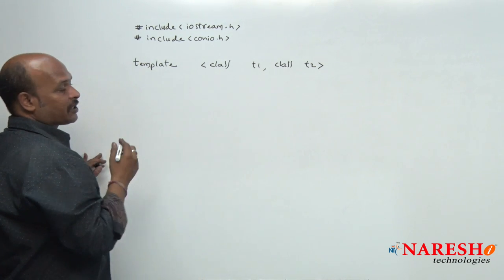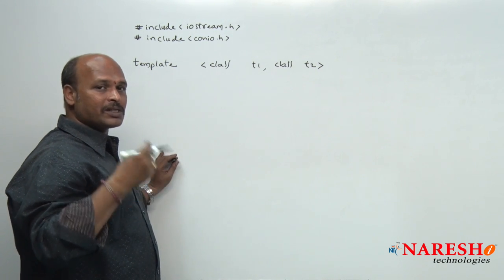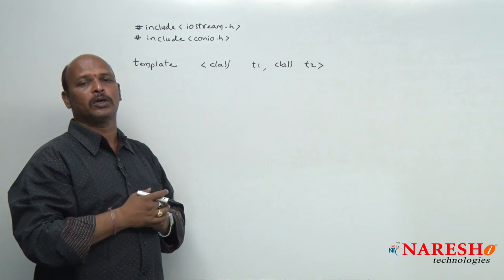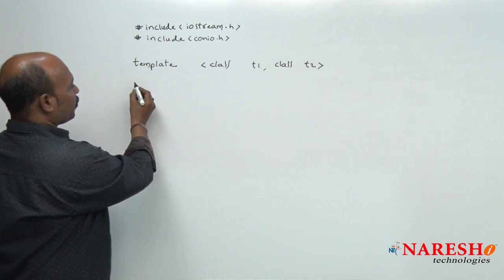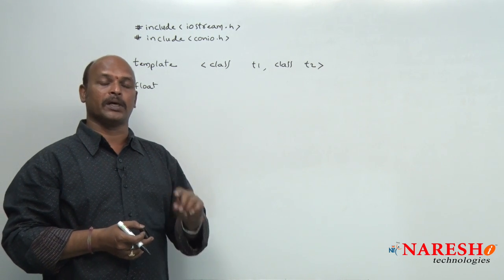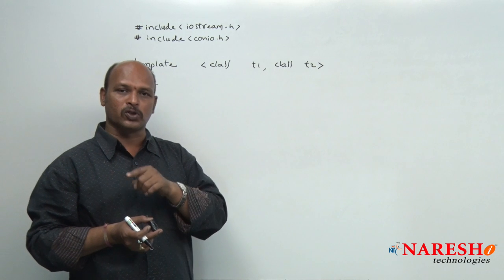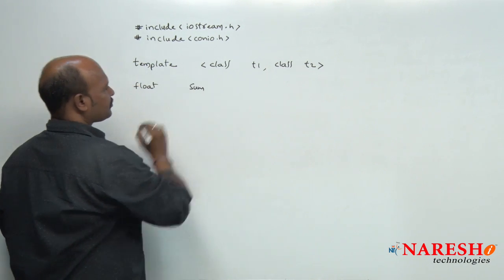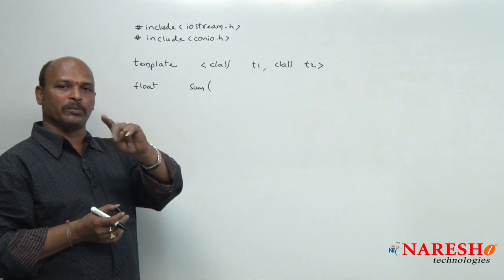Now we need a function — say to find the biggest number or the sum of two numbers. If the user sends integer and float, integer plus float is float; float plus float is float; float plus integer is also float. That is why it is better to use float as the return type, because integer cannot store floating data but float can store integer data. So the return type is float and the function name is, for example, sum.